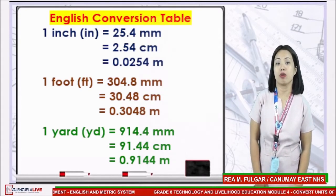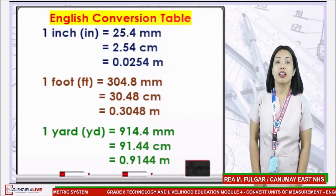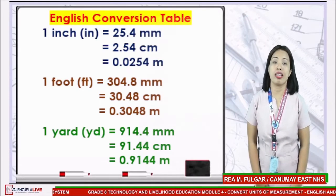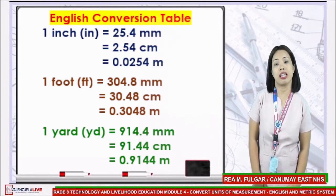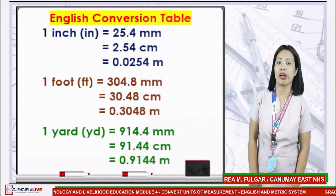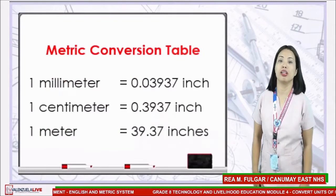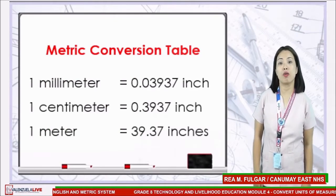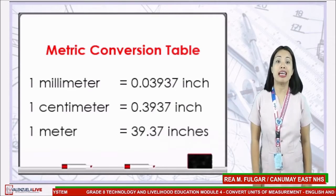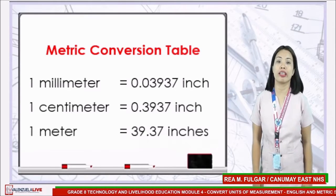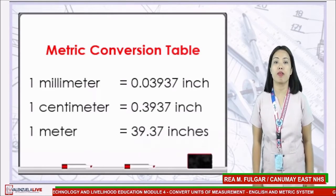One yard is equal to 914.4 millimeters, and 0.9144 in meters. This is the metric conversion table: one millimeter is equal to 0.03937 inch; one centimeter is equal to 0.3937 inch; and one meter is equal to 39.37 inches.